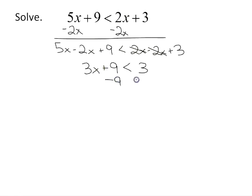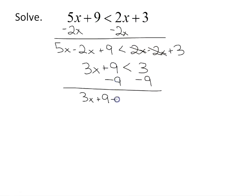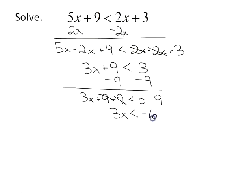Now I want to move the numeric terms — the terms without the variable — to the other side. So I subtract 9 from both sides. You can write it either horizontally or vertically, whichever you prefer. Positive 9 minus 9 is 0, so the left side is just 3x, and the right side, 3 minus 9, is negative 6.